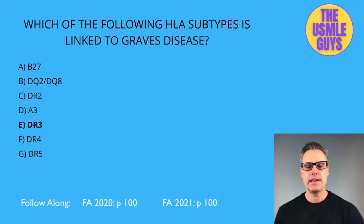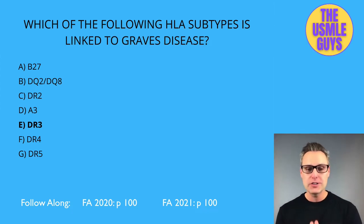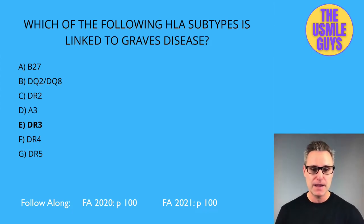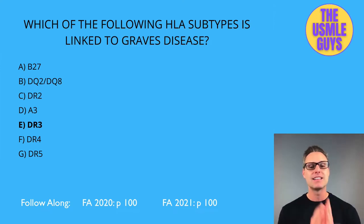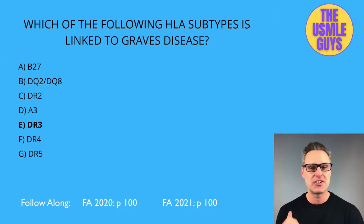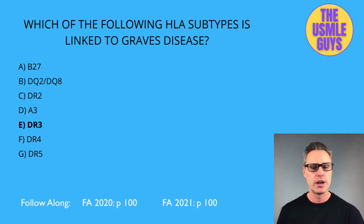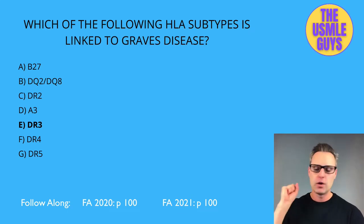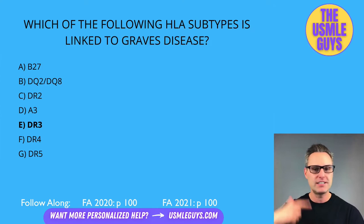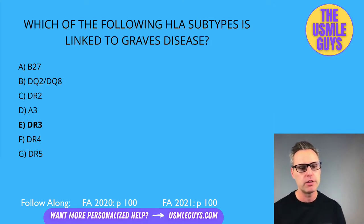The correct answer here is E, DR3. You'll want to know the important HLA subtypes and their associated diseases. Unfortunately, this is simply something you'll have to memorize, but it works great with Anki cards, index cards, or a PowerPoint quiz — continuously review these facts so you don't forget them.